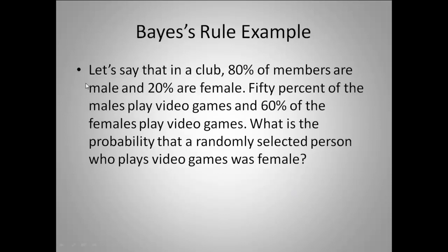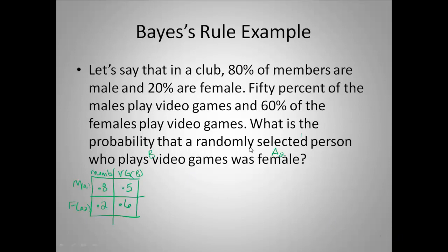Let's look at the example we started with. We've got 80% of members are male, 20% are female, 50% of the males play video games, and 60% of the females play video games. The question is: what's the probability that a randomly selected person who plays video games was female? So we're asking what's the probability the person was female — here is our A2 piece. Playing the video game is our given piece. We're going to use the chart we made before to help organize our numbers and put them all where they need to be. Once you've identified what the exhaustive piece is in your chart, the formula will fit together pretty nicely.